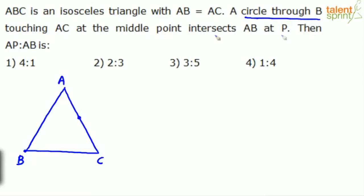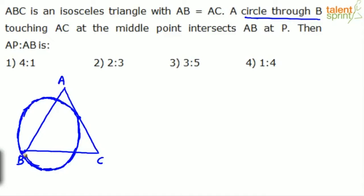The circle intersects AB at point P. Let me draw the circle — this is how the circle looks. So from point B, the circle passes through B. It touches AC at the middle point and intersects AB at P. So this point is P, and this middle point is Q.